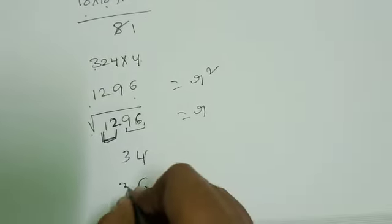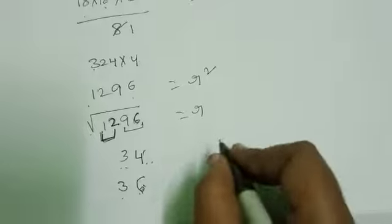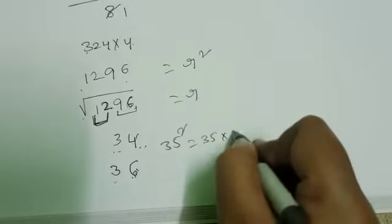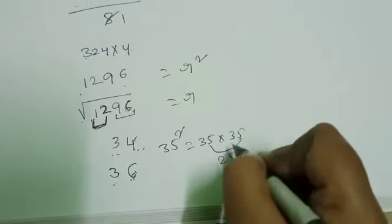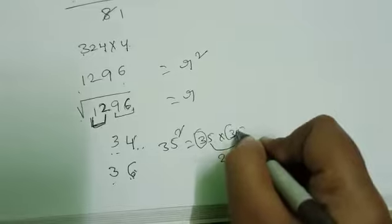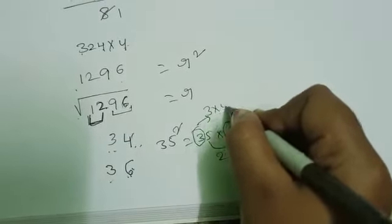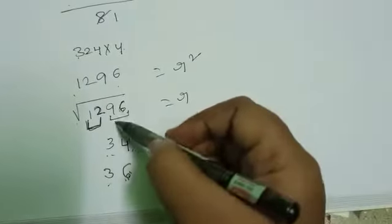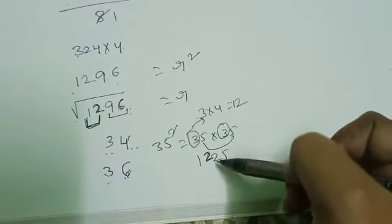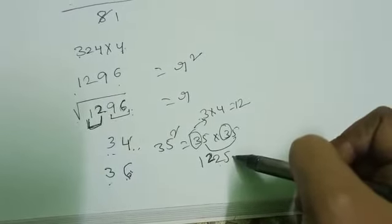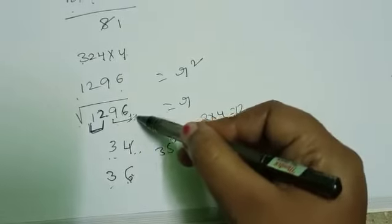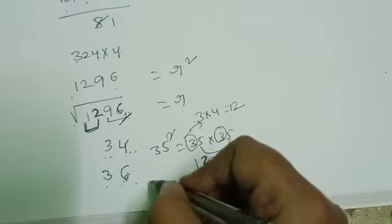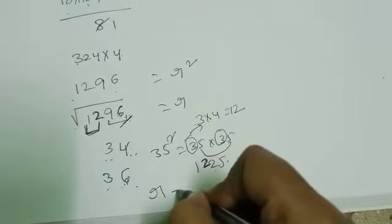Here we have 2 possibilities, 34 and 36. We know, in between, 35 square. What is the shortcut? 35 square: 5 into 5 is 25. Remaining digits are 3. 3 multiplied with next digit, 3 into 4, 3 4s are 12. So we want square root of 1296. 1296 is more than 1225. So answer is more value. 34 is less compared to 36. 36 is the more value. So answer is radius of the cone is 36 cm.